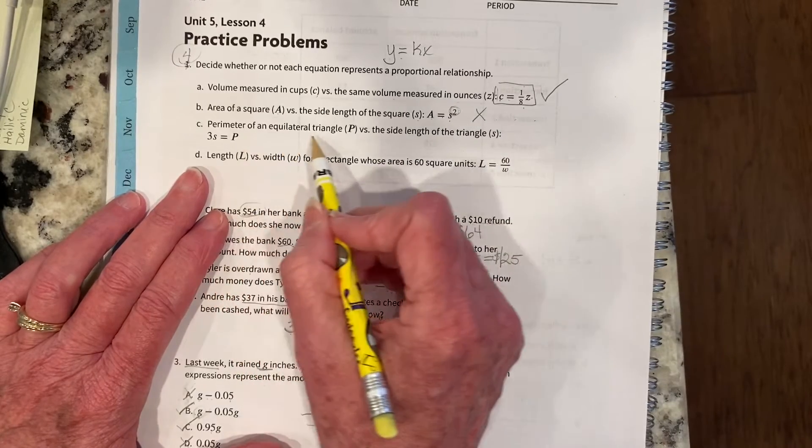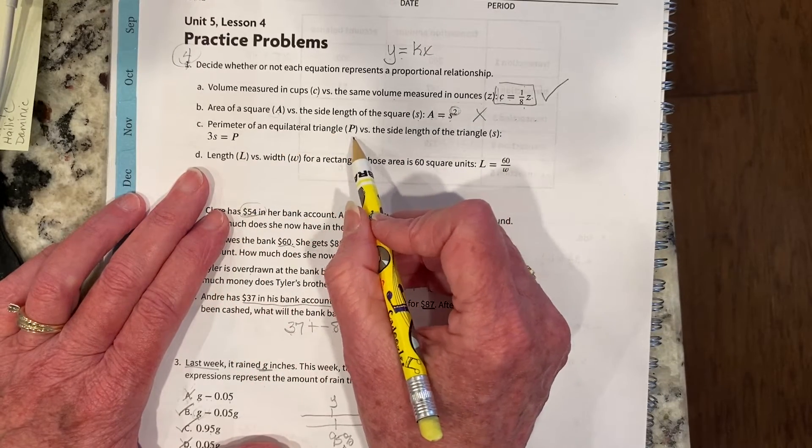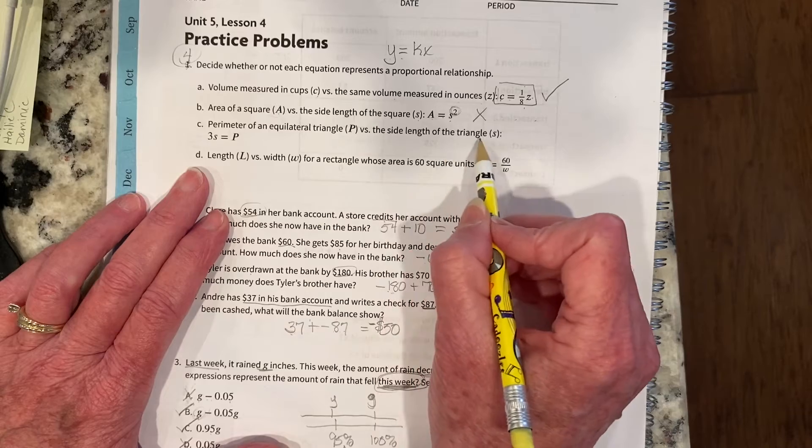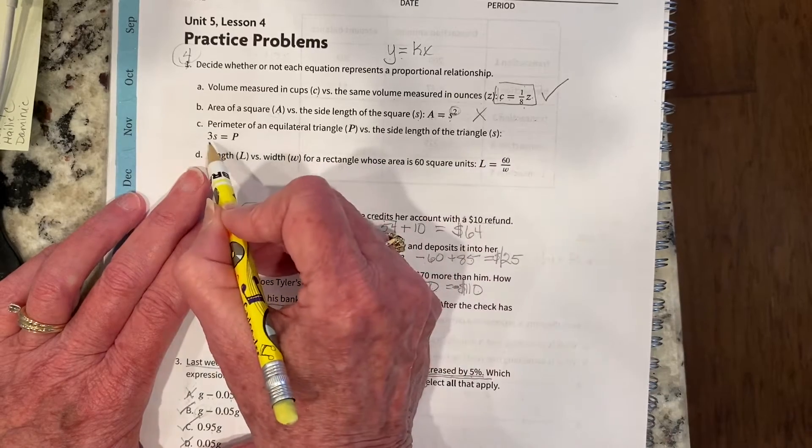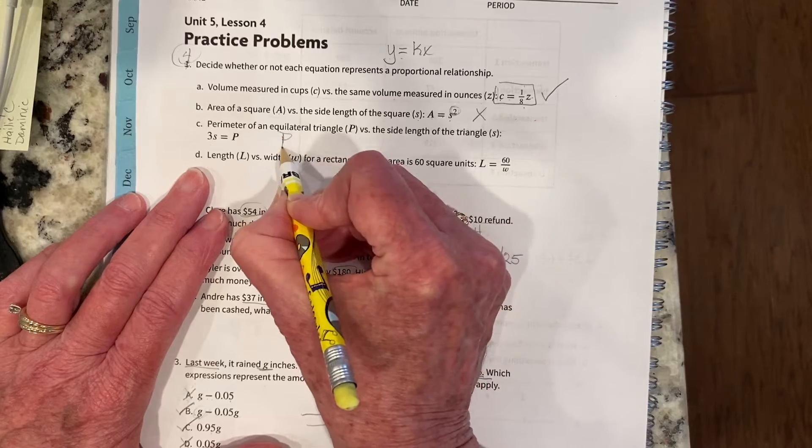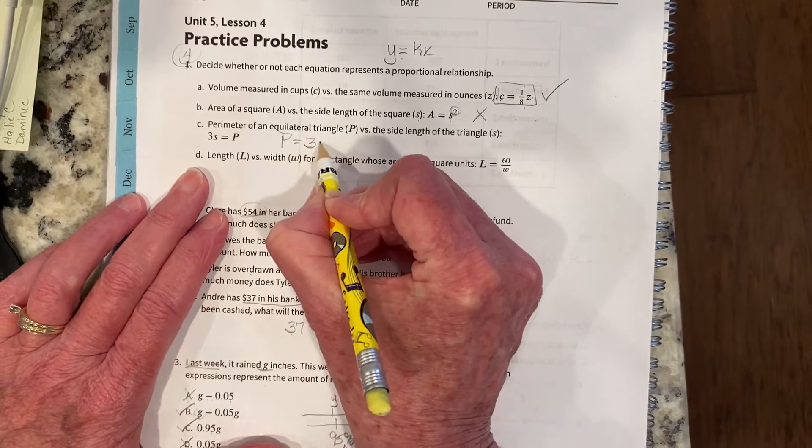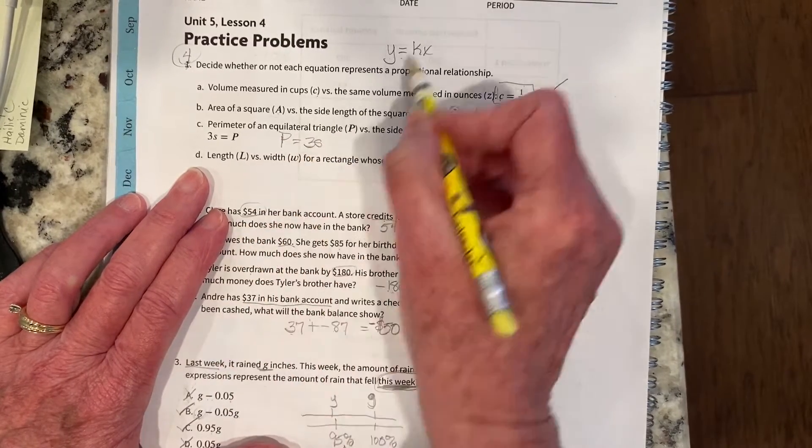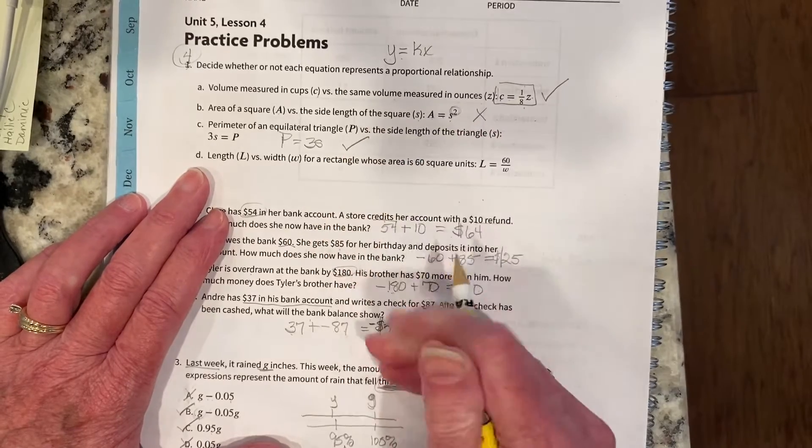All right, then we have perimeter of an equilateral triangle P versus the side length of triangle S. Well, we have 3S equals P. Can I not write that as P equals 3S? And then it is definitely in a proportional form.